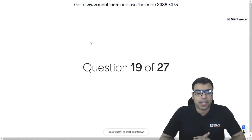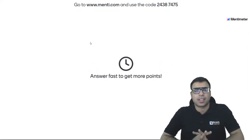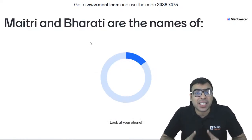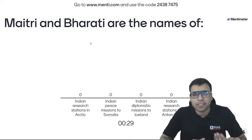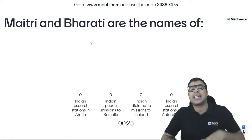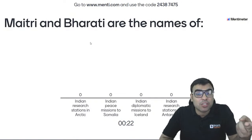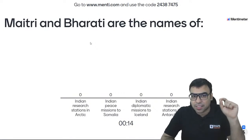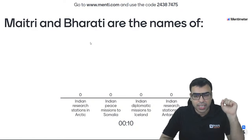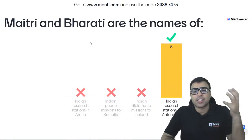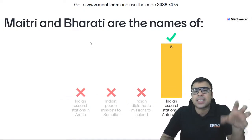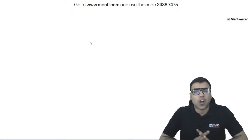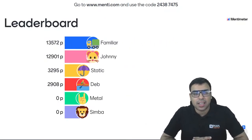Question number 19: Maitri and Bharti are the names of what? This is also a previous year question of ZAT 2021 or 2022. Options: Indian research station in Arctic; Indian peace mission to Somalia; Indian diplomatic mission to Iceland; Indian research station in Antarctica. The right answer is D — Maitri and Bharti are the names of Indian research stations in Antarctica. So D is the right answer.